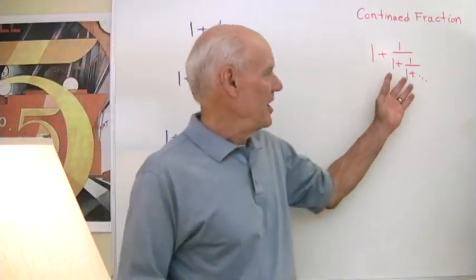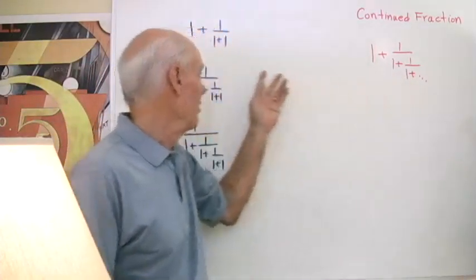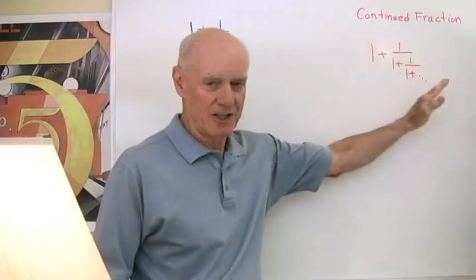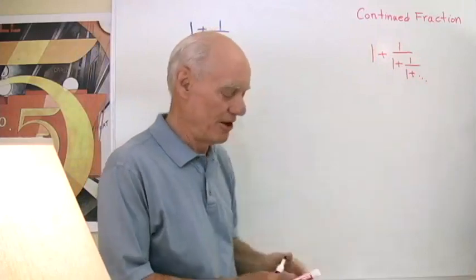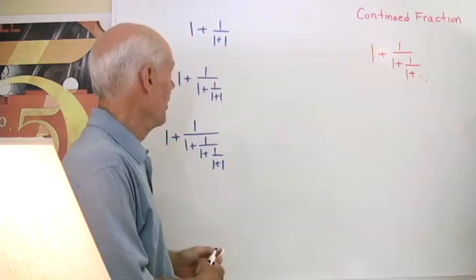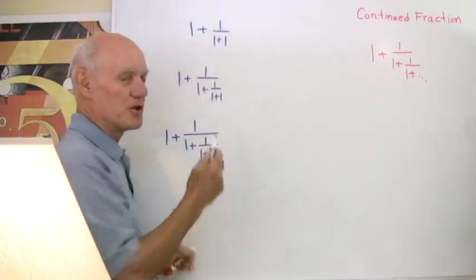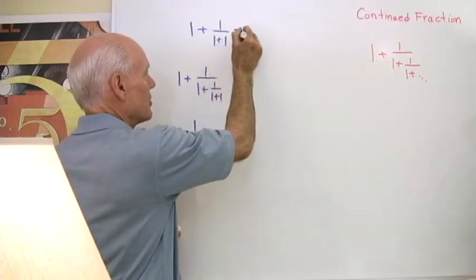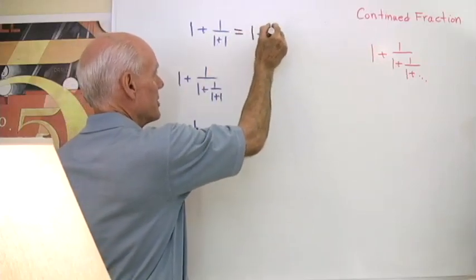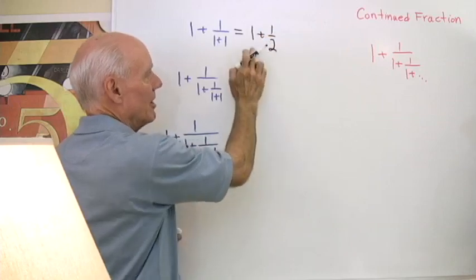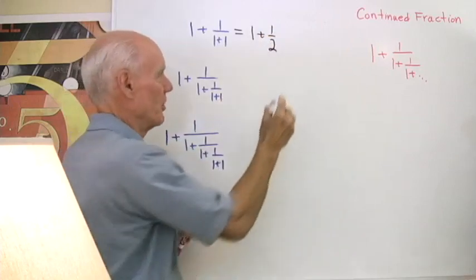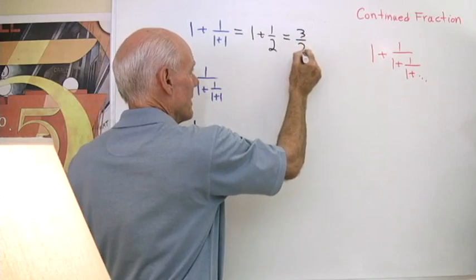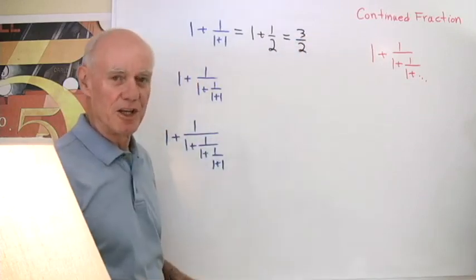I've taken this expression and written these smaller expressions to get an idea of what it looks like as I continue down this path. This first problem is pretty simple to work — I'll just start down here and add 1 and 1 to get 2. So this is the same as 1 plus 1 half. Well, 1 is 2 halves plus 1 half, that's 3 halves.